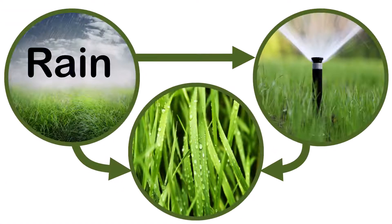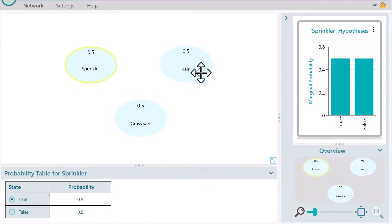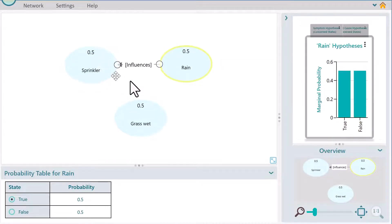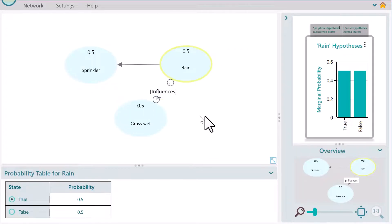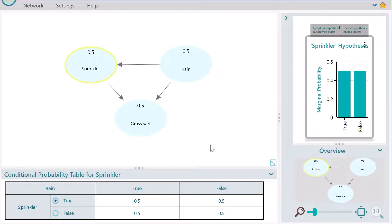The variable Rain affects the event Sprinkler on or off. Rain is also affecting the situation Grass Wet. Let's connect these variables accordingly. The event Grass Wet also depends on the variable Sprinkler, so connect another arrow from the Sprinkler node to the Grass Wet node.